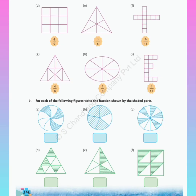In question number 9, you have to write the fraction in the box based on the shaded parts. Count the total parts in the first figure: 1, 2, 3, 4, 5, 6, 7, 8 — so 8 is the denominator. The numerator is according to shaded parts — 3 are shaded — so the fraction is 3 upon 8.